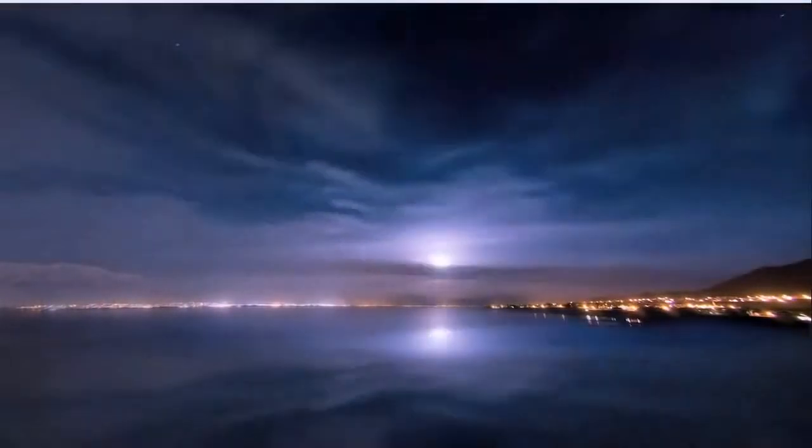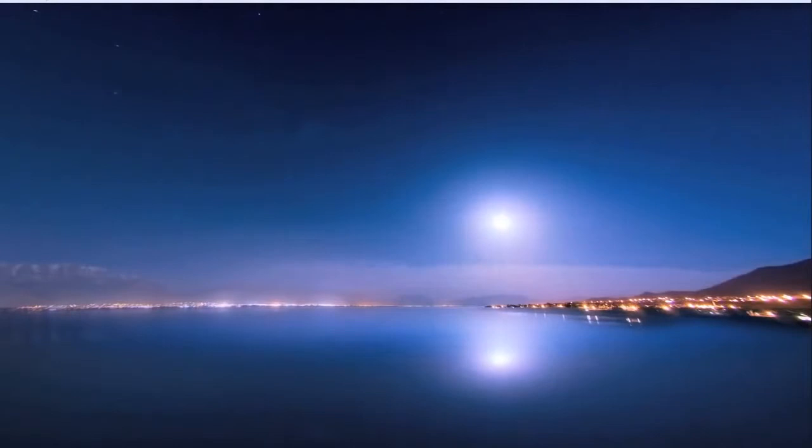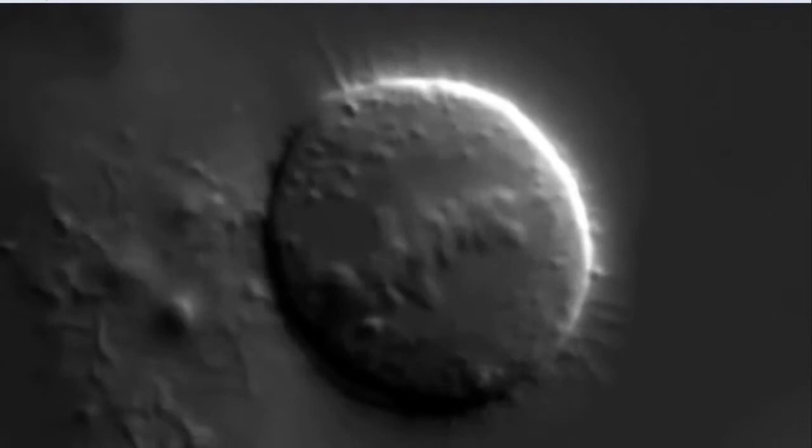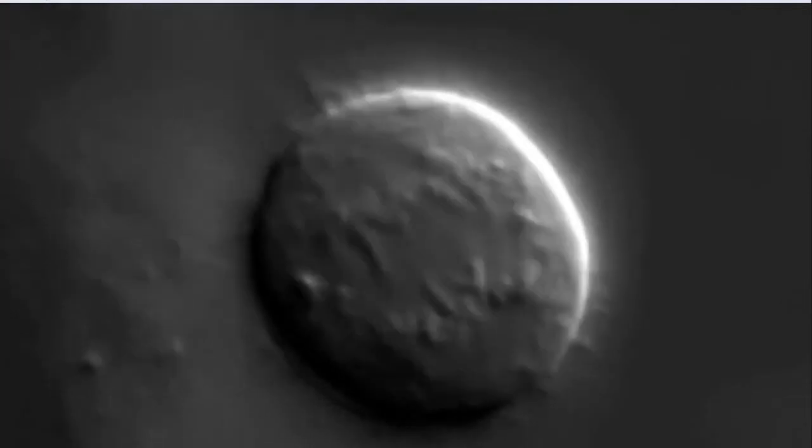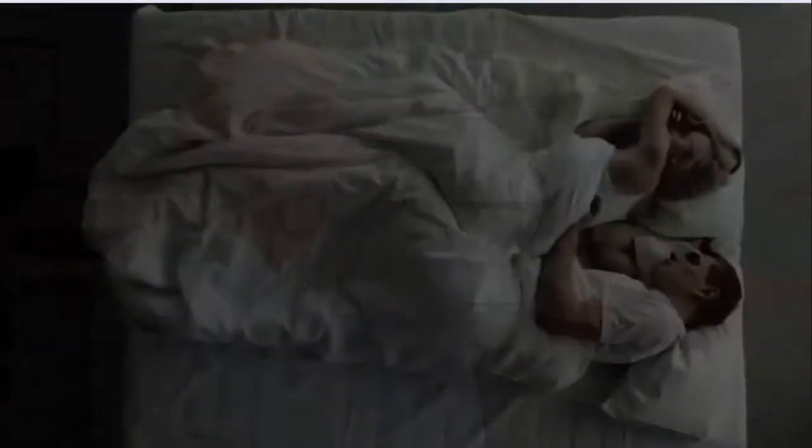At night our body replaces those cells through a process called cell mitosis, the dividing of cells. What it's doing is mopping up what are called free radicals. These free radicals are the spare electrons left over from the process of making the energy which we need to repair ourselves in the first place.